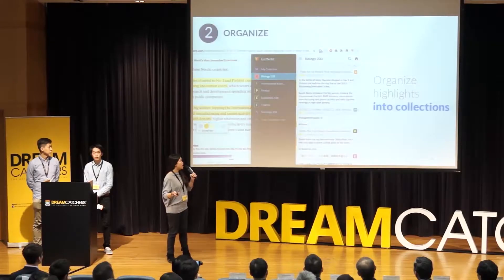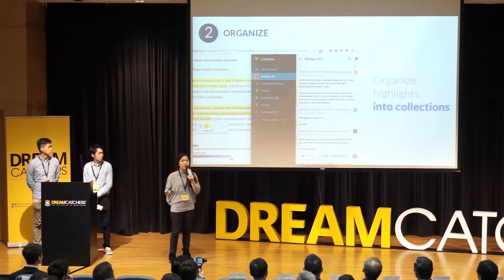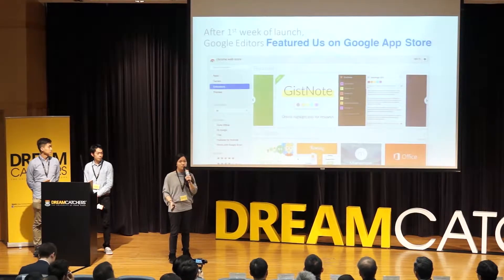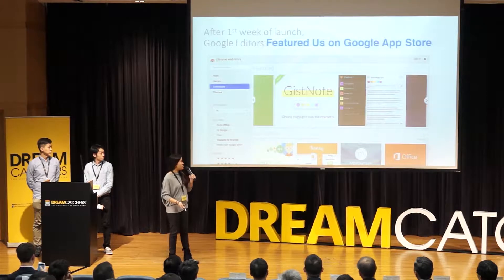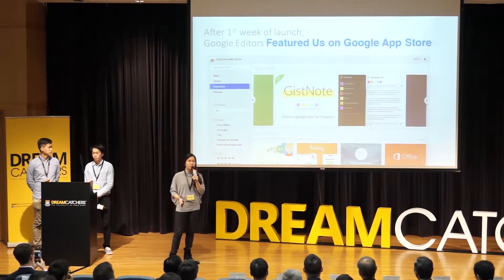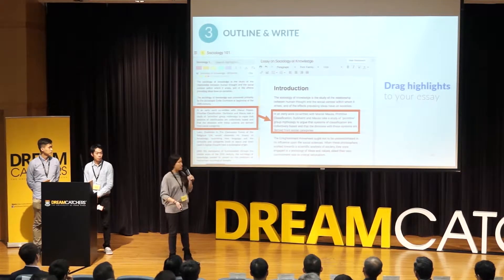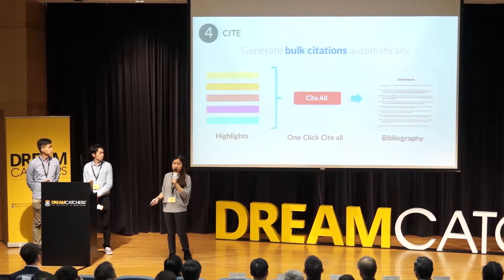Then we built the second part, which is a web app that allows you to organize highlights into collections — it could be your essay title, etc. We put the first two steps into the Chrome app store, and after the first week of launch, to our surprise, Google editors found us and put us on the home page. We also have a private beta focusing on the third step that allows you to drag highlights into your essay and create citations automatically.